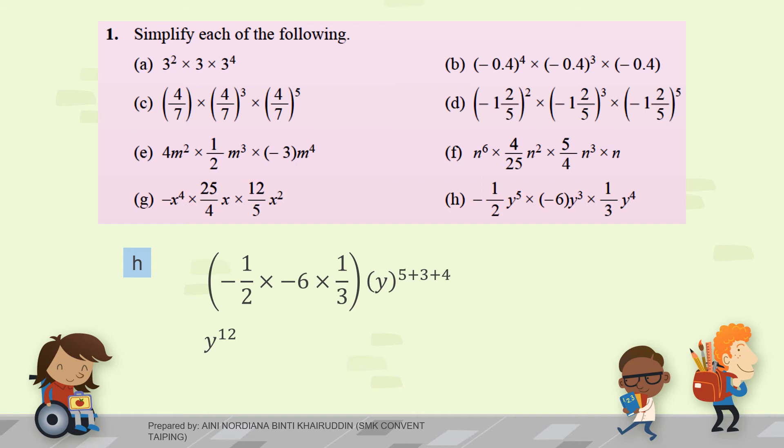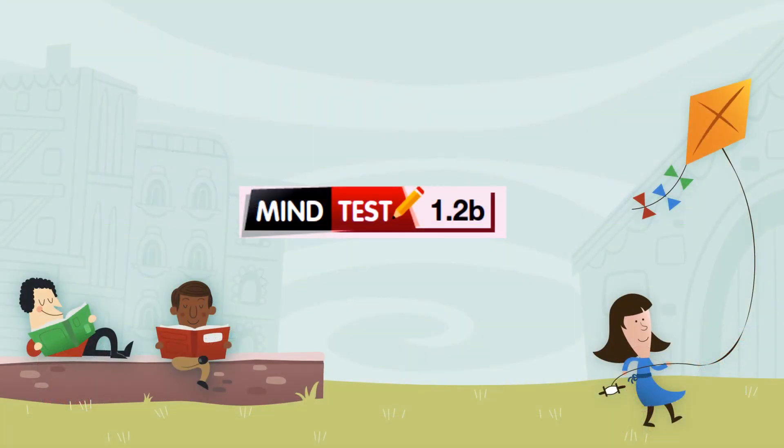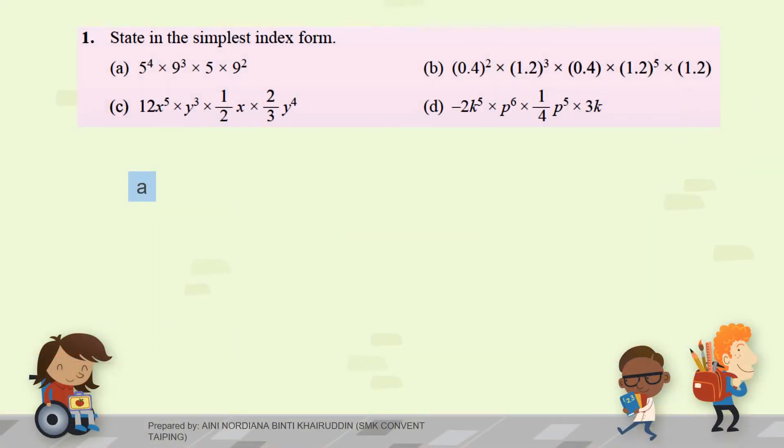Next, MindTest 1.2b. Question number one: state in the simplest index form. We have two different bases here, 5 and 9. So, as I mentioned earlier in my previous video, first, we have to group the same base first.